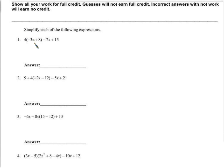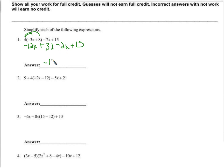To begin with, I'm going to distribute this 4, because it's a good enough place to start. We get negative 12x plus 32. Now we have minus 2x plus 15, and we have a negative 12x and a negative 2x — that's negative 14x. 32 plus 15 is 47.